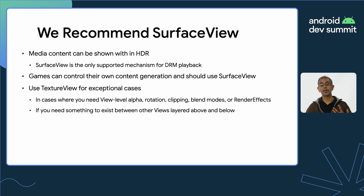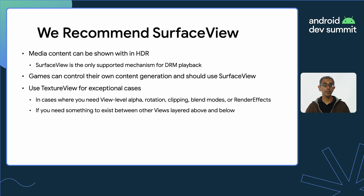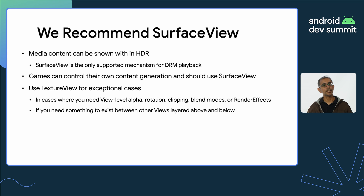Our recommendation: we think SurfaceView is the way to go for most cases. Media content can be shown in HDR. DRM playback is only possible using a SurfaceView. Games are already using SurfaceView, and we recommend they keep doing so because they control their own content generation. A TextureView does have some specific use cases — for example, if you want to use view-level primitives like rotation, alpha, render effects, or clipping. Also, if you need to sandwich something between two different views, a TextureView is the only way to do it, since a SurfaceView cuts a hole. In short, use a SurfaceView.